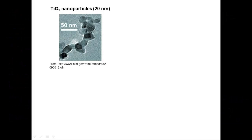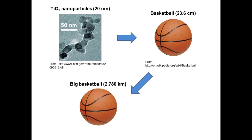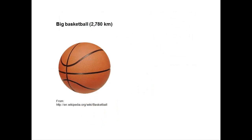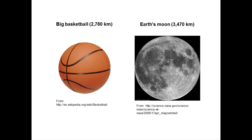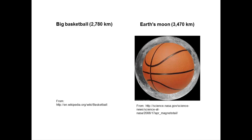Thus, if a titanium dioxide nanoparticle with a diameter of 20 nanometers were scaled up to have the same diameter as our basketball, 23.6 centimeters, then our basketball would have a diameter of 2,780 kilometers when scaled up equivalently. How do we make sense of these orders of magnitude differences? One way is to compare the size of our very large basketball to another very large spherical object. If we compare this very large basketball to the Moon, we find that it is only a little smaller. The Moon has a diameter of 3,470 kilometers. Just like it would take 11,800,000 titanium dioxide nanoparticles to span the diameter of a basketball, it would take a similar number of normal-sized basketballs to span the diameter of the Moon.